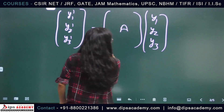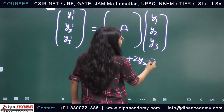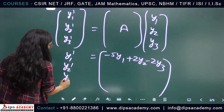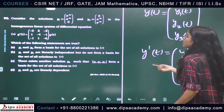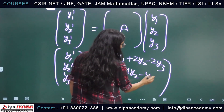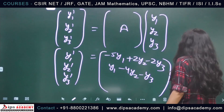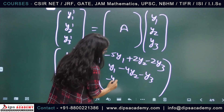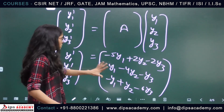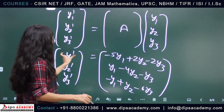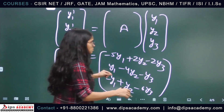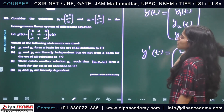Expanding the matrix multiplication, we get three equations: y1' = -5y1 + 2y2 - 2y3, y2' = y1 - 4y2 - y3, and y3' = -y1 + y2 - 6y3. So the entries of the two column vectors are equal, giving us this system of three differential equations.